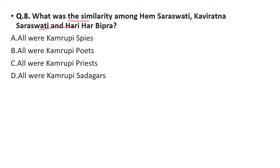Question 8: What was the similarity among Ham Sarswati, Kaviratna Sarswati, and Harihar Bipra? Options: all were Kamrupee spice, all were Kamrupee Poets, all were Kamrupee Priests, or all were Kamrupee Sadagars. The correct answer is all were Kamrupee Poets — they were famous in poetry.